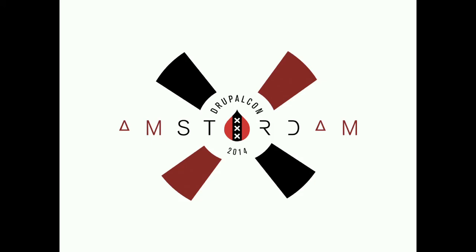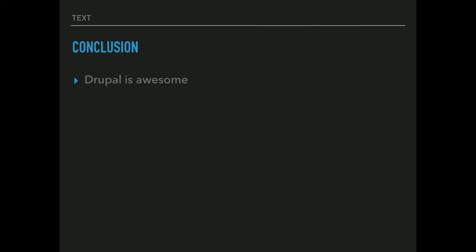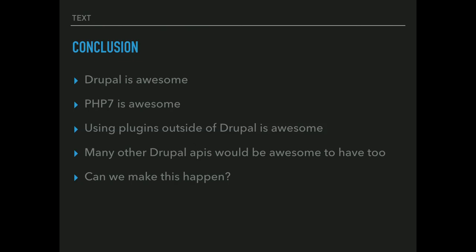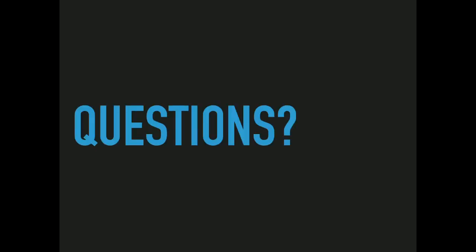So my conclusion is that Drupal is awesome, PHP 7 is also awesome, and I can say from personal experience that using plugins outside of Drupal is also awesome. I think if we were to do this to many other Drupal APIs, that too would be awesome. I'm wondering whether there are any blockers to making this happen, because I think this is very important and we should very much consider doing it. I'm going to open the floor for questions now — I know I've thrown a ton of stuff out there and took a really hard right turn in the last five minutes.